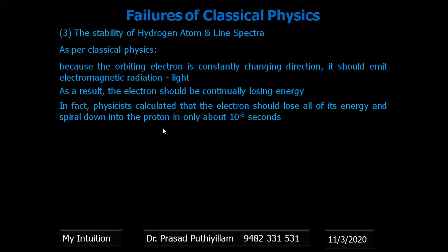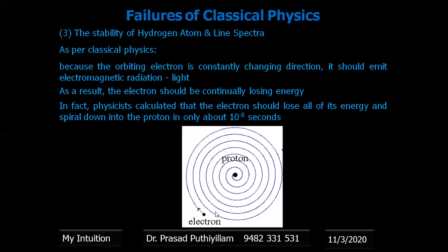So when it loses energy, it should spiral out or fall to the nucleus. The calculation as per classical physics says that it takes only 10 to the power minus 8 seconds for an atom to collapse. This is the representation: the electron loses energy and should finally go to the nucleus within 10 to the power minus 8 seconds, but it is not happening.